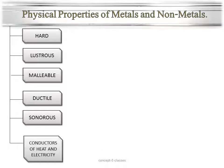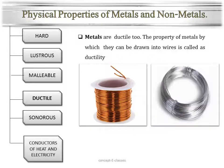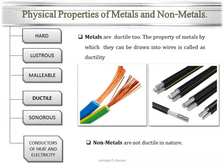The next physical property is ductility. Metals are ductile — that is, the property of metals by which they can be drawn into wires is called ductility. This copper wire and aluminium foil are used for making wires in electrical appliances as well. But we have not seen a wire made of carbon or coal, so nonmetals are non-ductile in nature.